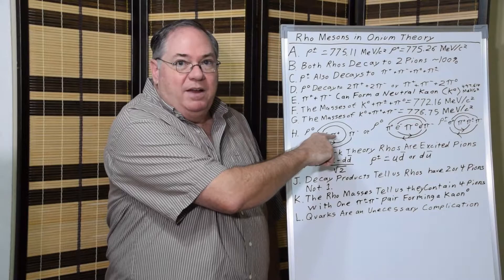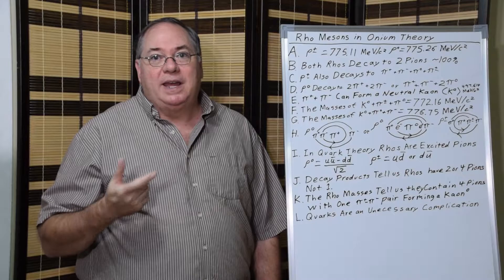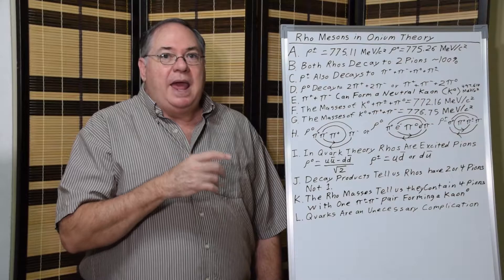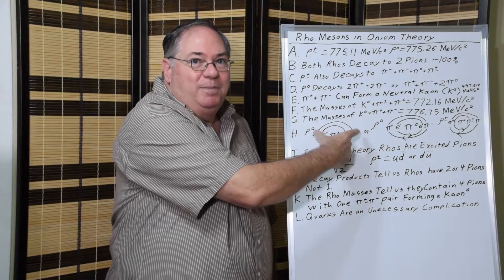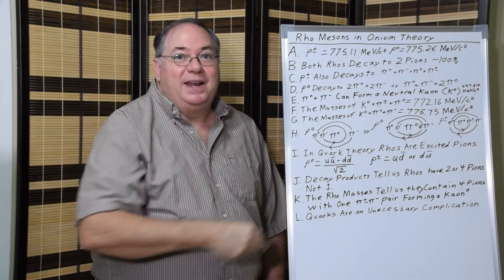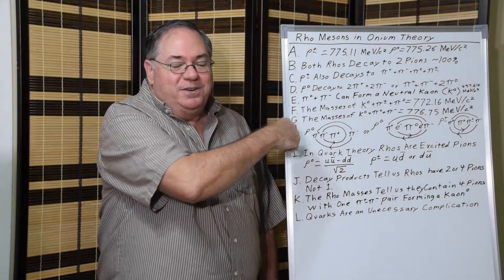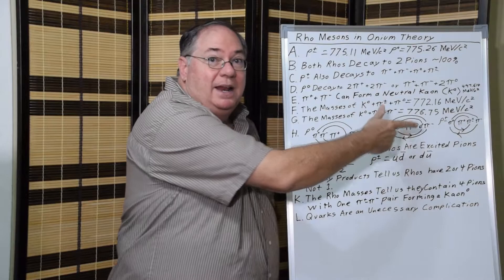I drew these examples here, where we have a pion orbited by a pion orbited by two pions forming a kaon. To be proper, the kaon orbits are going to be smaller than the pion orbits because they are more energetic. In reality, the two outer pion orbits are probably less than the size of the pion, but that would be difficult to draw, so I just draw it this way.